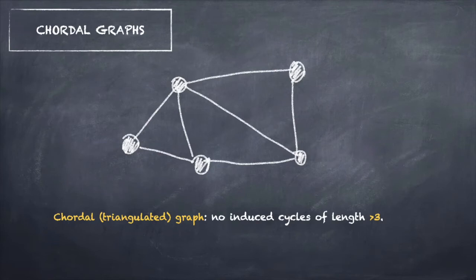A graph is chordal if every induced cycle of length more than three contains a chord. That is, there are no induced cycles of length more than three.